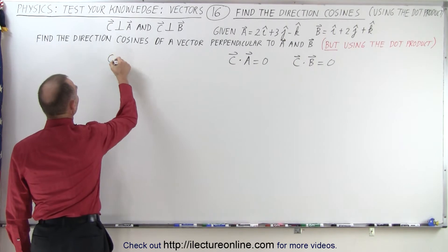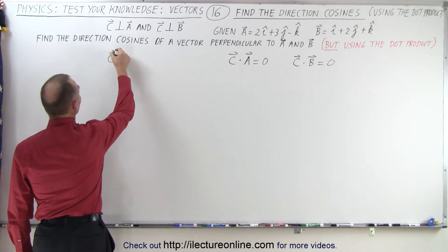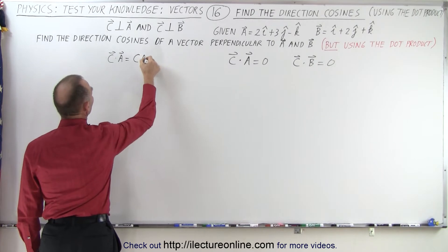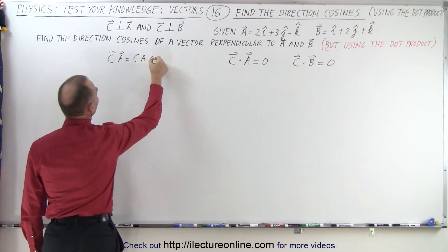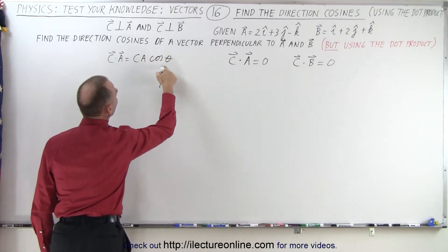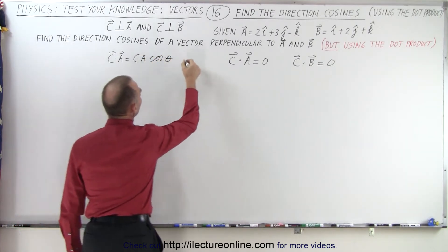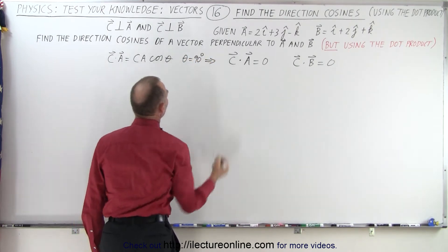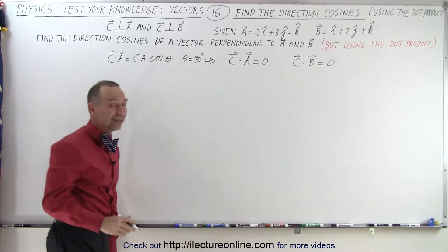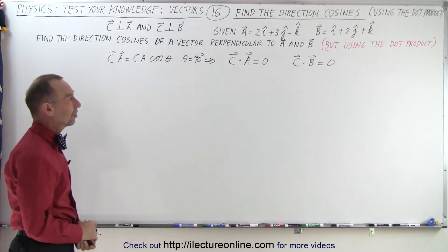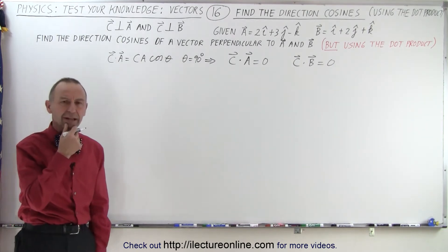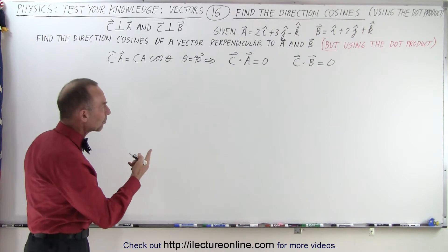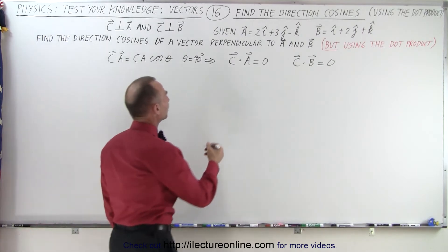Let's write the definition down. So we have C dot A is equal to the magnitude of C times the magnitude of A times the cosine of the angle between them. And since theta is equal to 90 degrees, that then implies that the cosine of 90 is zero and therefore the dot product is zero. But how does that help us?